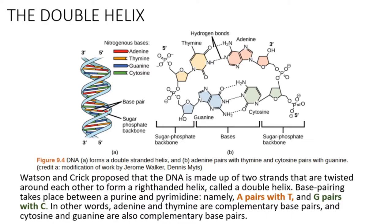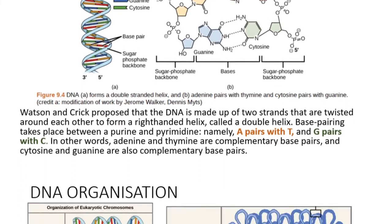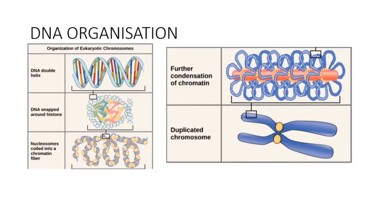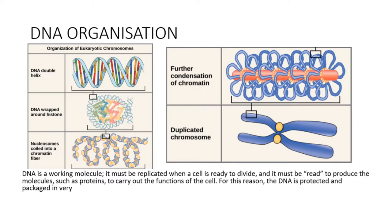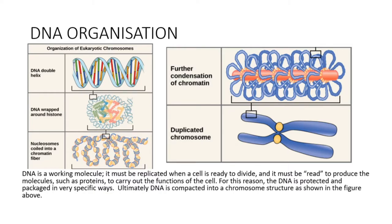In other words, adenine and thymine are complementary base pairs, and cytosine and guanine are also complementary base pairs. DNA is a working molecule. It must be replicated when a cell is ready to divide, and it must be read to produce molecules such as proteins to carry out the functions of the cell.